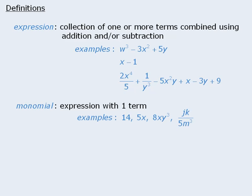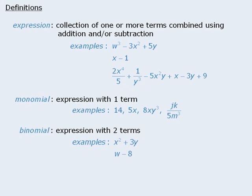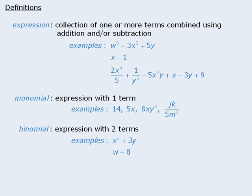Now a monomial is an expression consisting of one term. A binomial is an expression consisting of two terms. And in general, the word polynomial applies to any expression consisting of one or more terms.